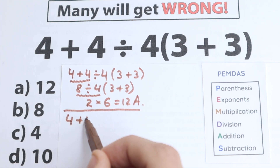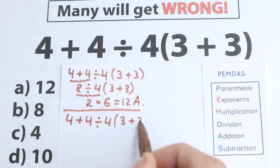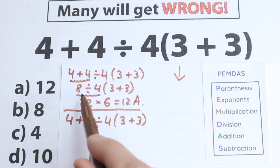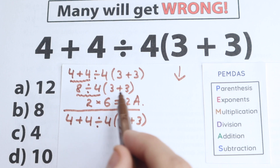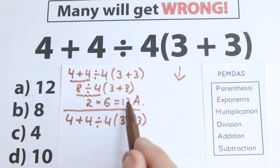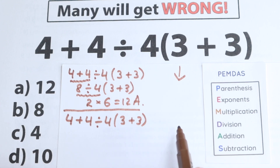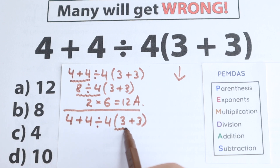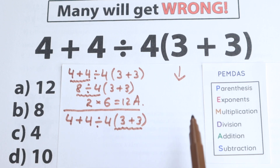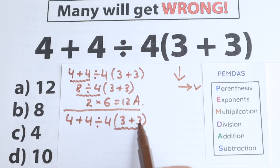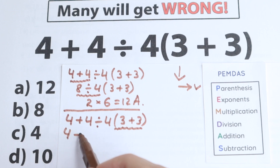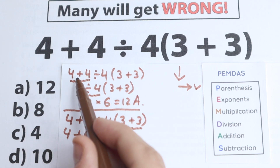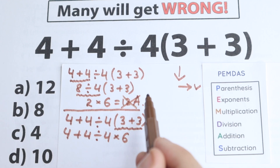So we have our question: 4 plus 4 divided by 4, and in parentheses 3 plus 3. Let's go through the steps. PEMDAS goes from top to bottom — the first step is parentheses. Where do we have parentheses? Right here on the right-hand side: 3 plus 3 equals 6. So now we have 4 plus 4 divided by 4, times 6. This is a completely different first step — the wrong solution starts with addition, which is absolutely wrong. We cannot start with addition; that is a very big mistake.